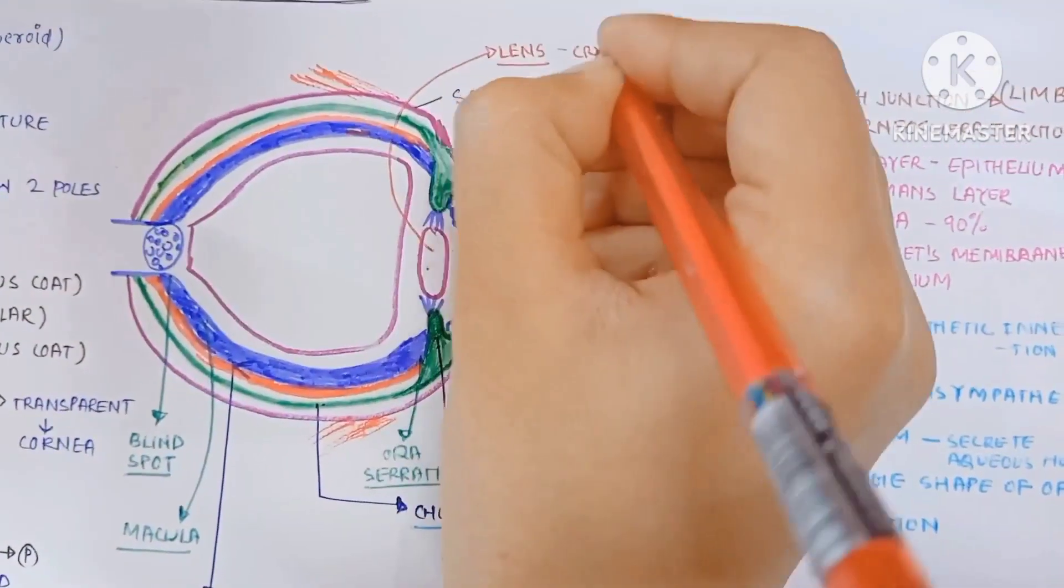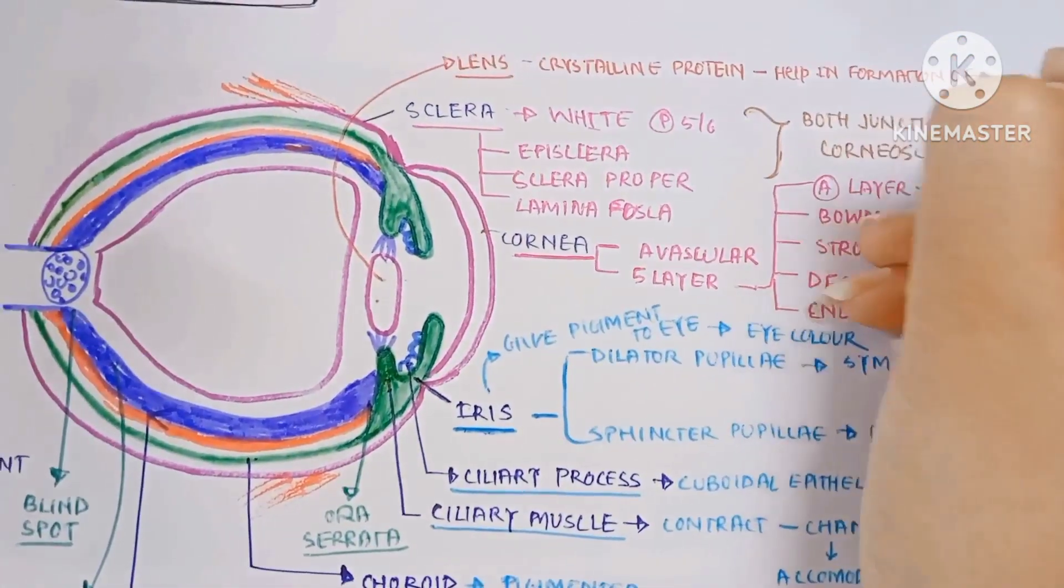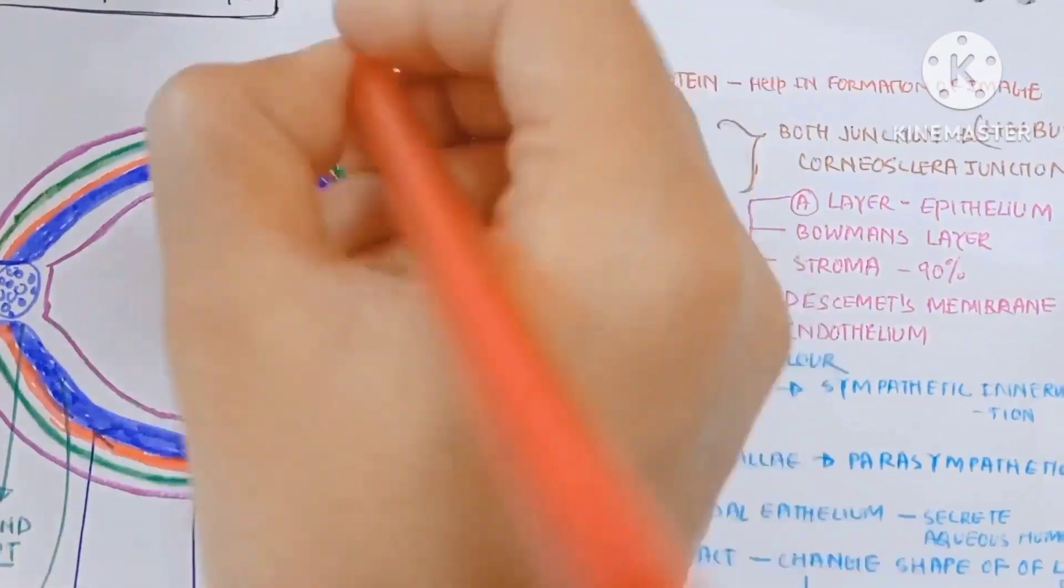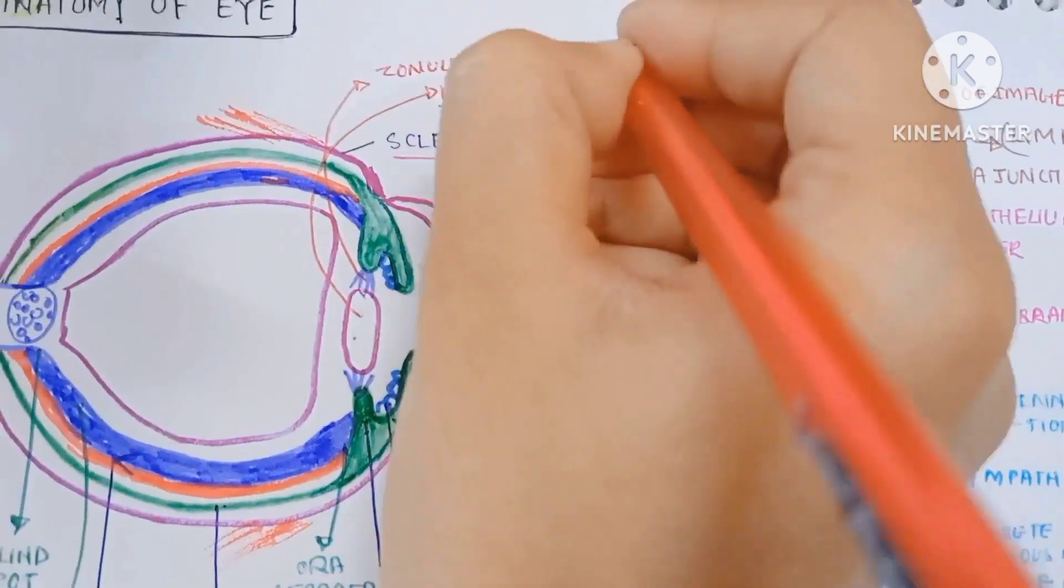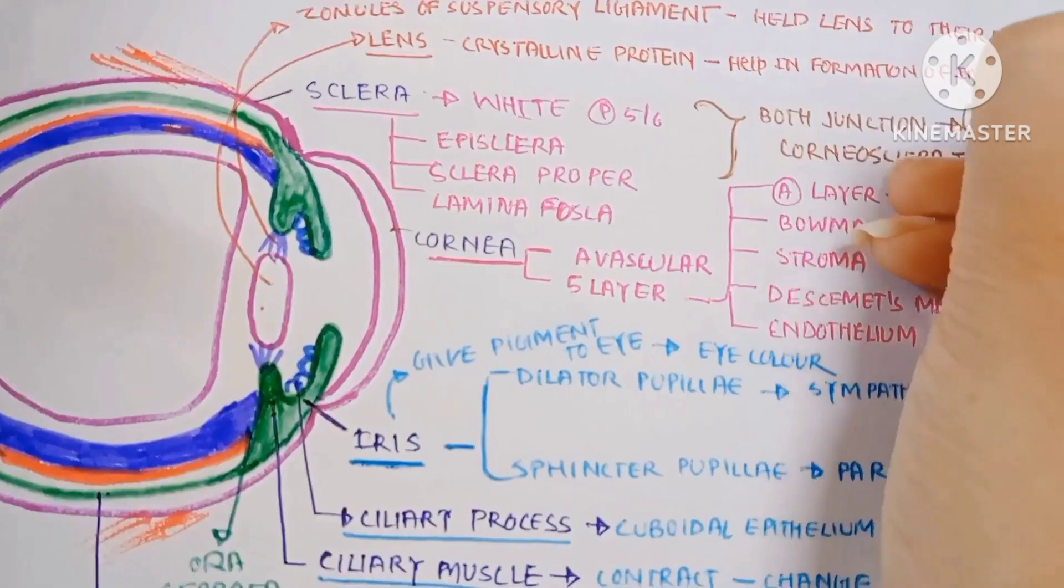This is the lens, which is a crystalline protein helping in the formation of the image. It is suspended by the zonules of the suspensory ligament which hold the lens in position.